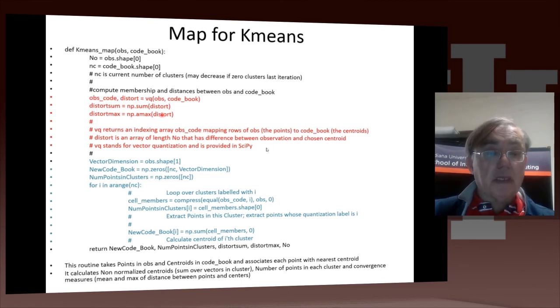We calculate the sum for the distortion, which is going to end up being the average distortion. We sum that up for the distortion which is the maximum. We find the maximum value over the points. Then we run over each cluster.